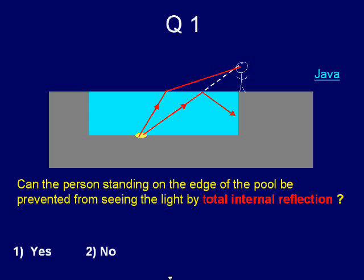Since some rays are able to reach the eyes, the person should be able to see the coin and so the answer is no, the person cannot be prevented.